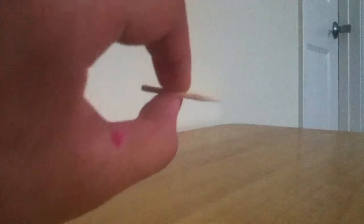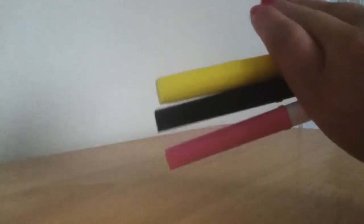Okay, so you start. So what you need is some scissors, a toothpick that you've cut in half. Then you're going to need some markers. Here are the colors that you need: yellow, black, and pink.